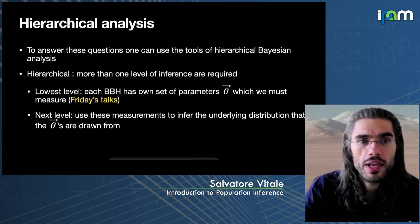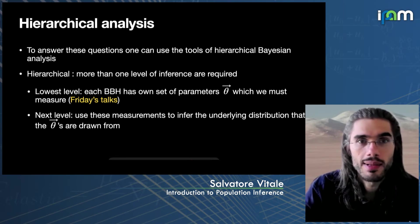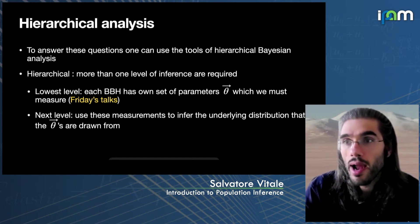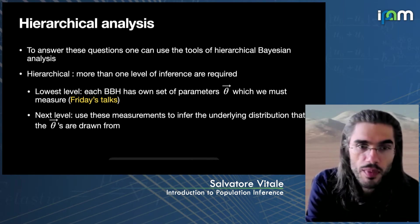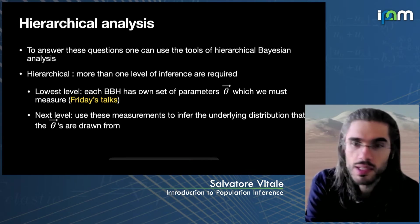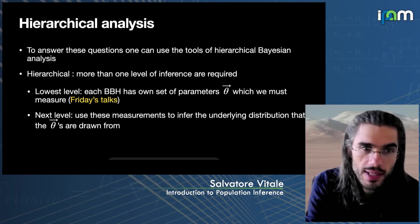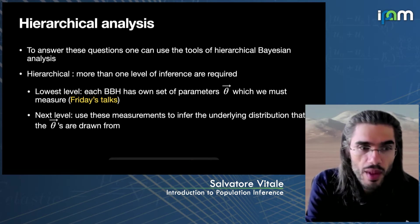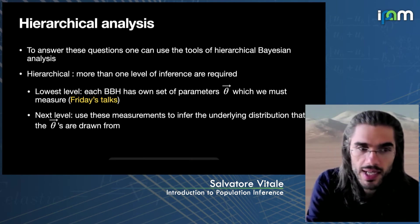What is required to perform this type of analysis is a so-called hierarchical Bayesian analysis. The reason why it's hierarchical is because more than one level of inference is required. Typically, we first need at a lower level to characterize the parameters of each of the compact binaries — for example, black holes are characterized by their masses, spins, sky positions, distance, and so on, which we can call vector theta. The next level, once you have an idea of the parameters of each source individually, is to use all of the sources jointly to infer the underlying distribution that these theta vectors are drawn from.